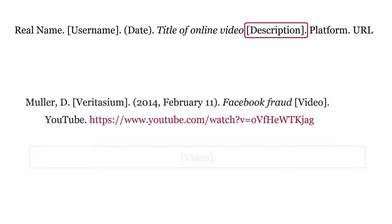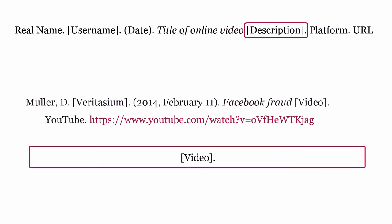Description. After the title, describe the work. Do this by including a description of the medium or format. For online videos, we use the term 'video'. The description is surrounded by square brackets. End the description with a full stop.